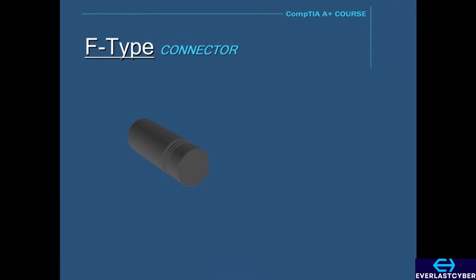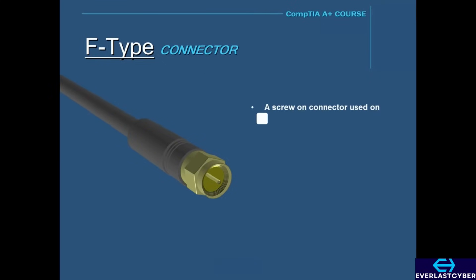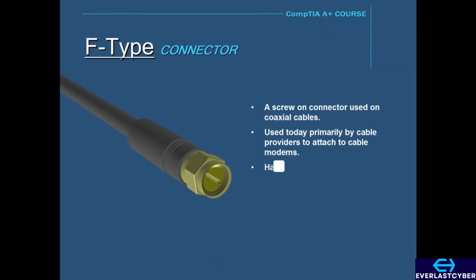This connector is called the F-type. This is a threaded connector typically used on coaxial cables, primarily used by cable providers to attach to cable modems. The F-type hand-tightens by an attached nut.